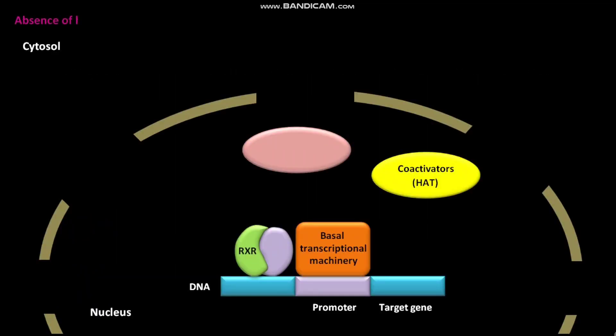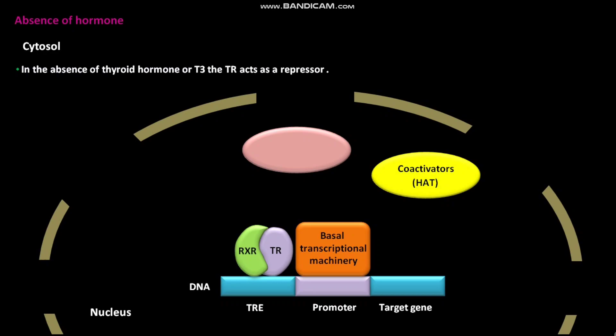In the absence of thyroid hormone or T3, the thyroid hormone receptor (TR) present in the nucleus binds to the thyroid hormone response element (TRE) present in the DNA. In the absence of thyroid hormone or T3, the TR acts as a repressor.